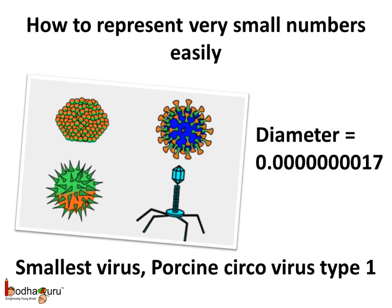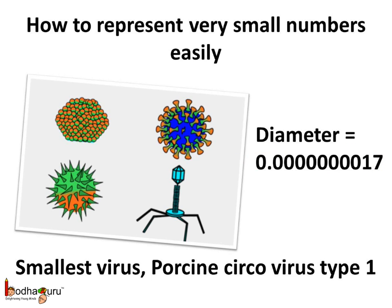That is 17 and the point shifted to the left by 9 places, which is 0.0000000017 meters. Now we would learn more about the negative exponents in the higher classes.